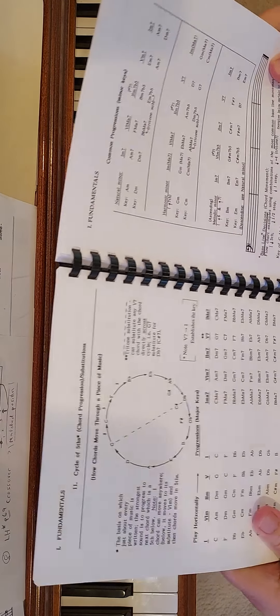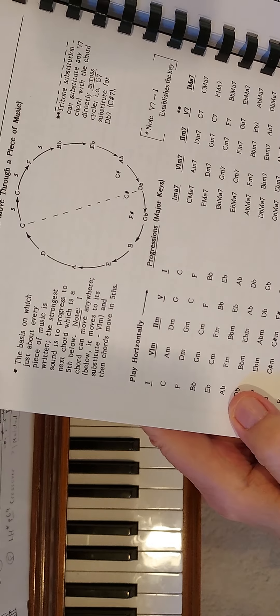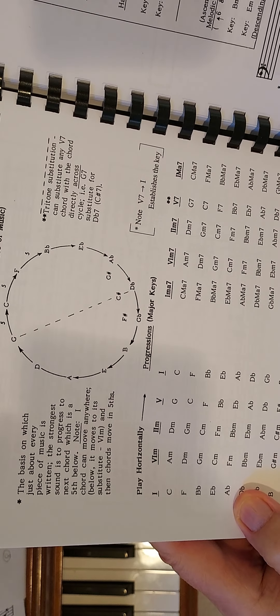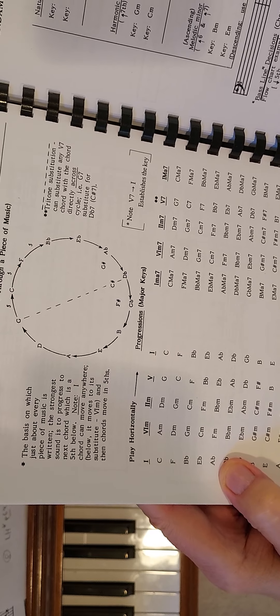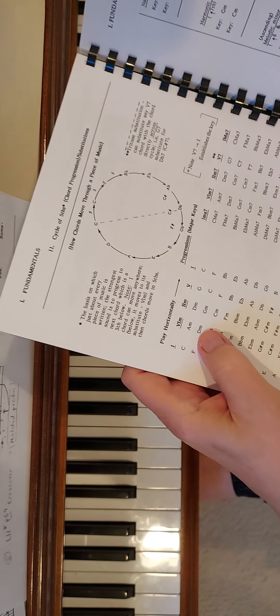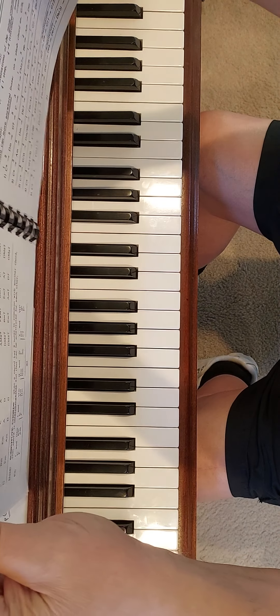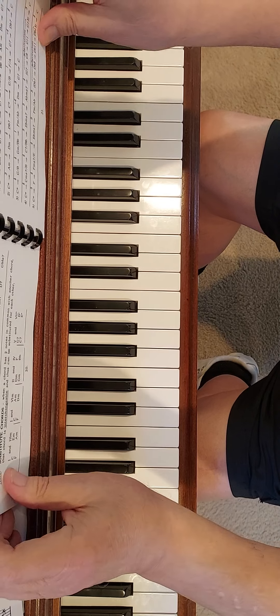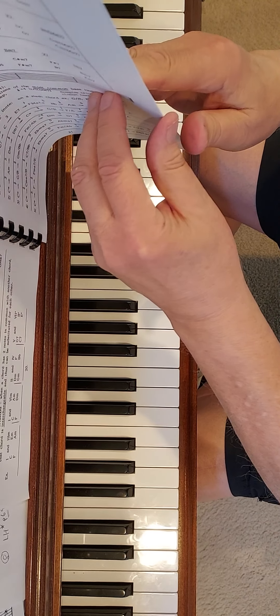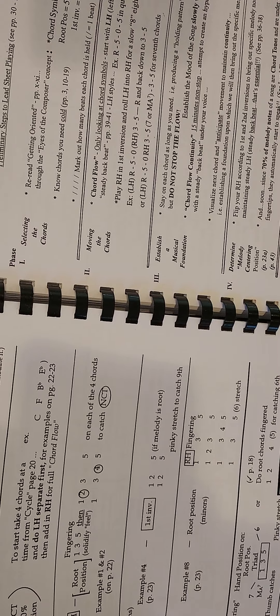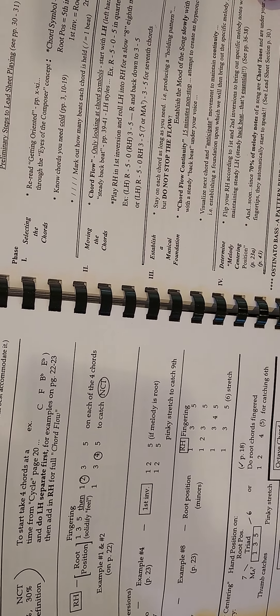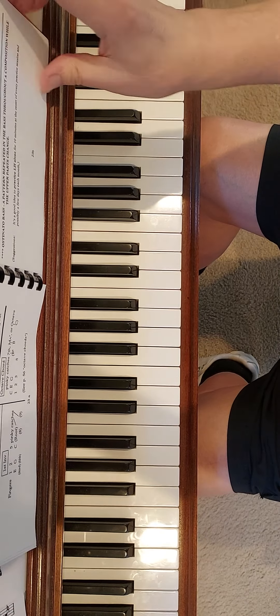Page 20 is the cycle of fifths and all the 6-2-5-1s. We're going to focus on the right side of the page, which is seven chords — dominant sevens, minor sevens, major sevens. I've done part one where I focused on the triads and explained that with 'Over the Rainbow.' A detailed explanation of chord flow is on page 23b — it breaks down the entire idea: selecting the chords, moving the chords, establishing a foundation, and determining the melody centering position.